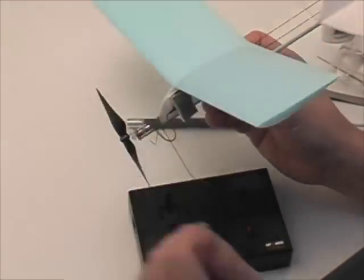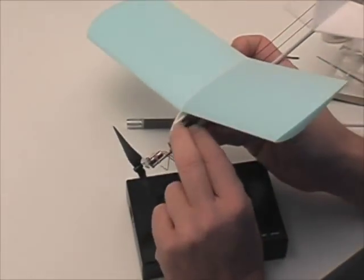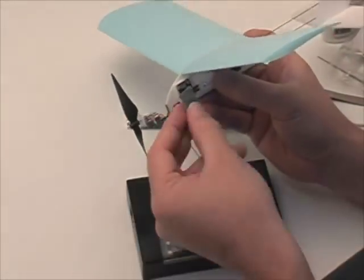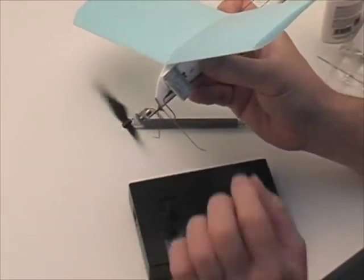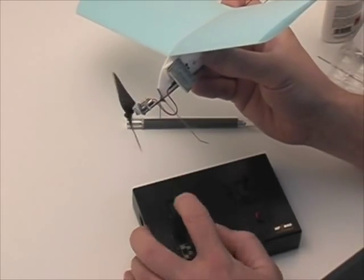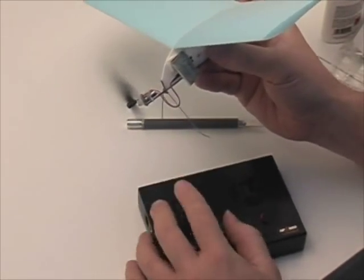You can put your propeller on now and make sure it's going in the right direction, reverse the plug if needed. Now you can take your receiver, put it on the front end of the fuselage just as you see and the thing will just about be ready to fly off the table.